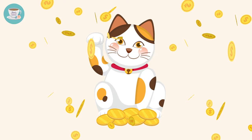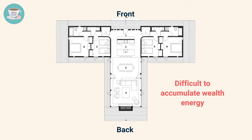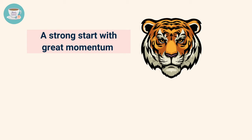Let's first look at houses with a larger front area but smaller back area. Here is an example. According to feng shui principles, a house with a larger front but smaller back is difficult to accumulate wealth energy. This is because the energy escapes the house faster than it can be collected. This type of layout symbolizes a strong start with great momentum but a tendency to phase out.